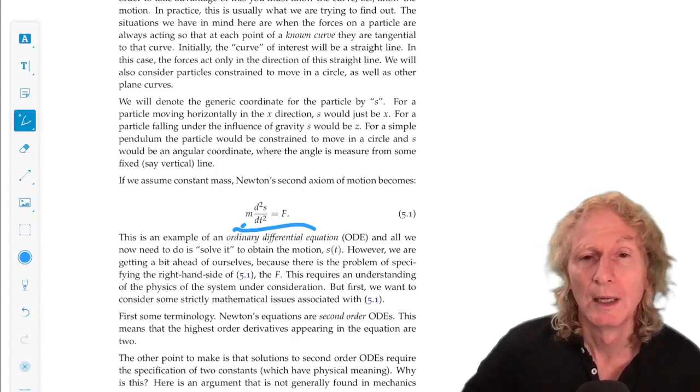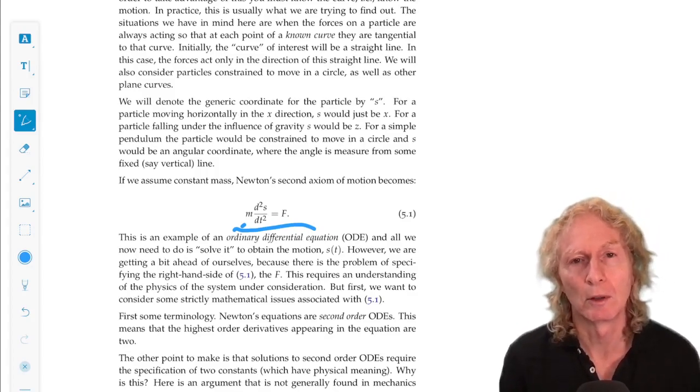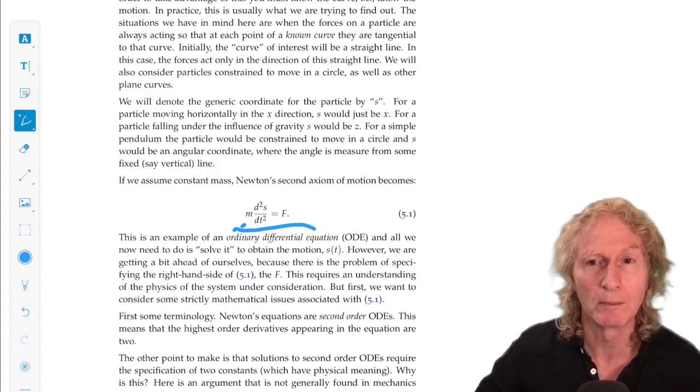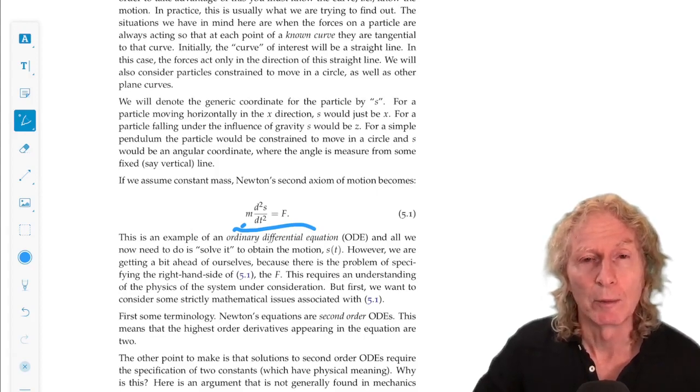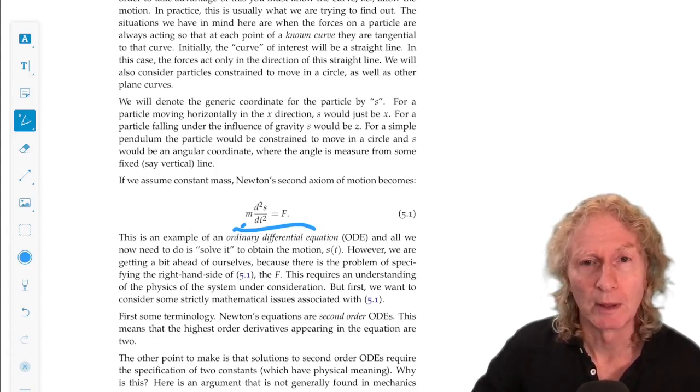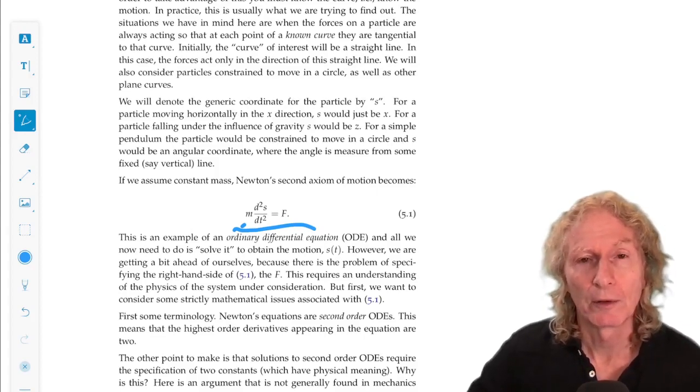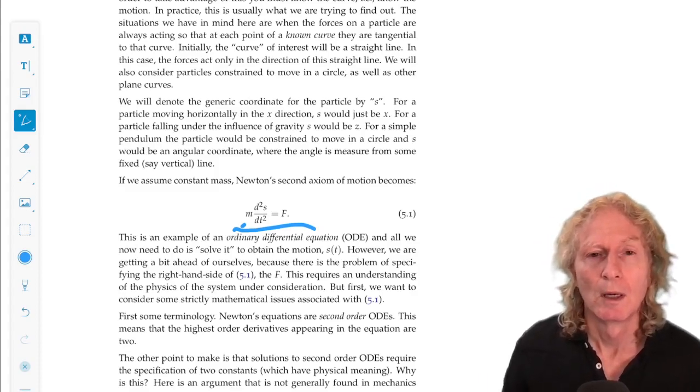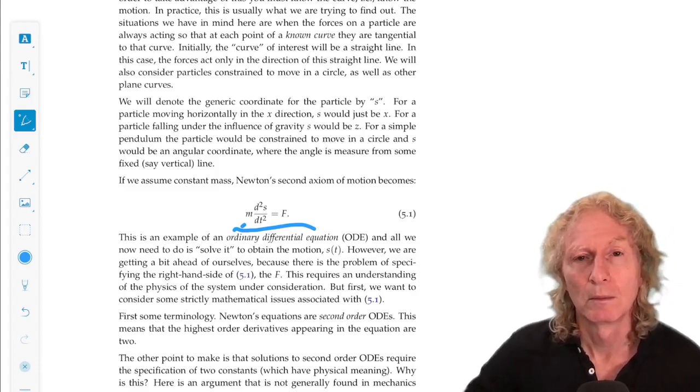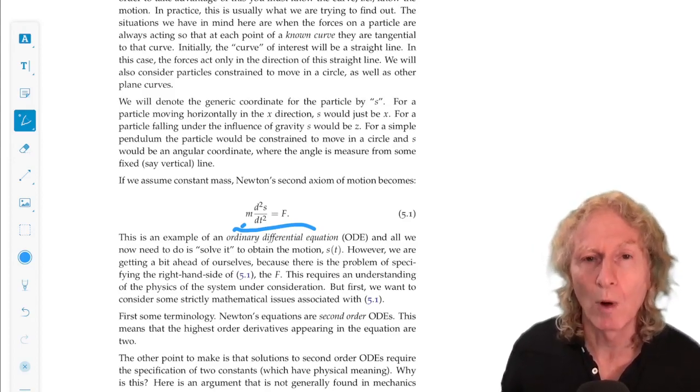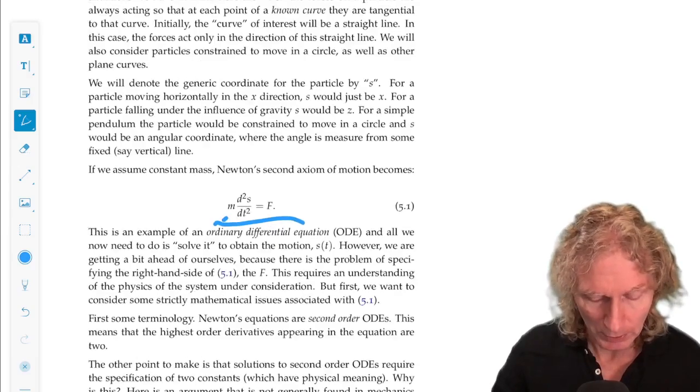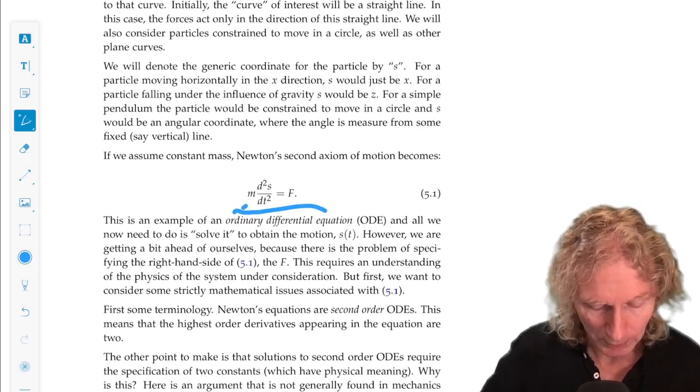Okay, if we're talking about motion of a particle along the horizontal, it could be x. Motion of a particle vertically, it could be z. Or if we have something like a pendulum and it's oscillating back and forth, possibly it would be an angle theta. So this is just a generic one-dimensional Newton's equations, Newton's second law.